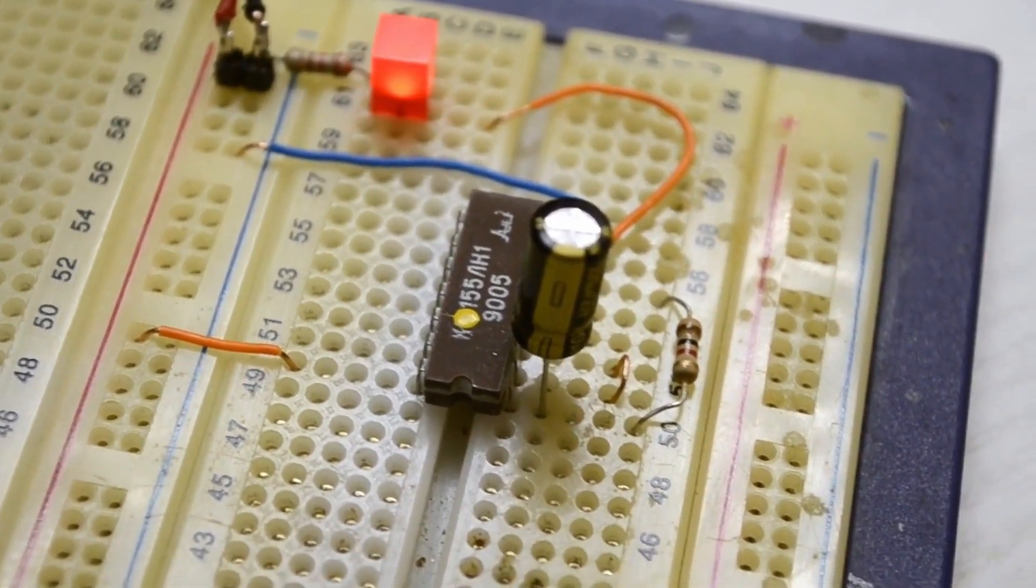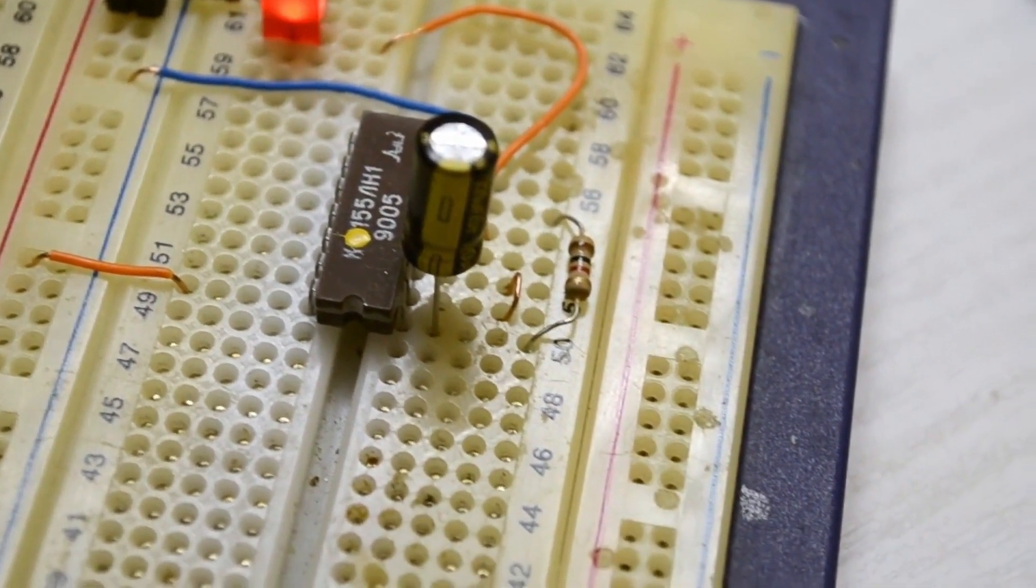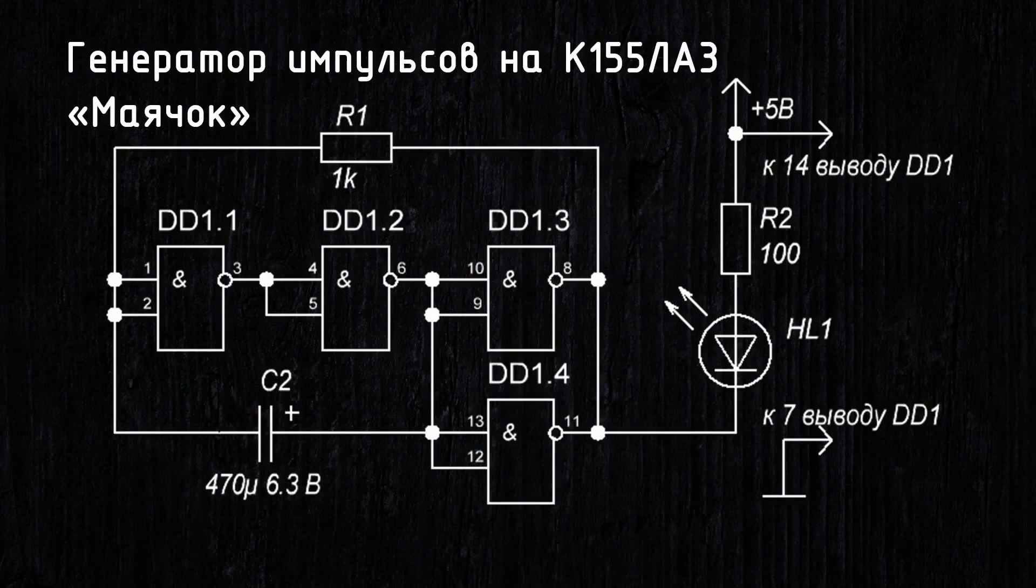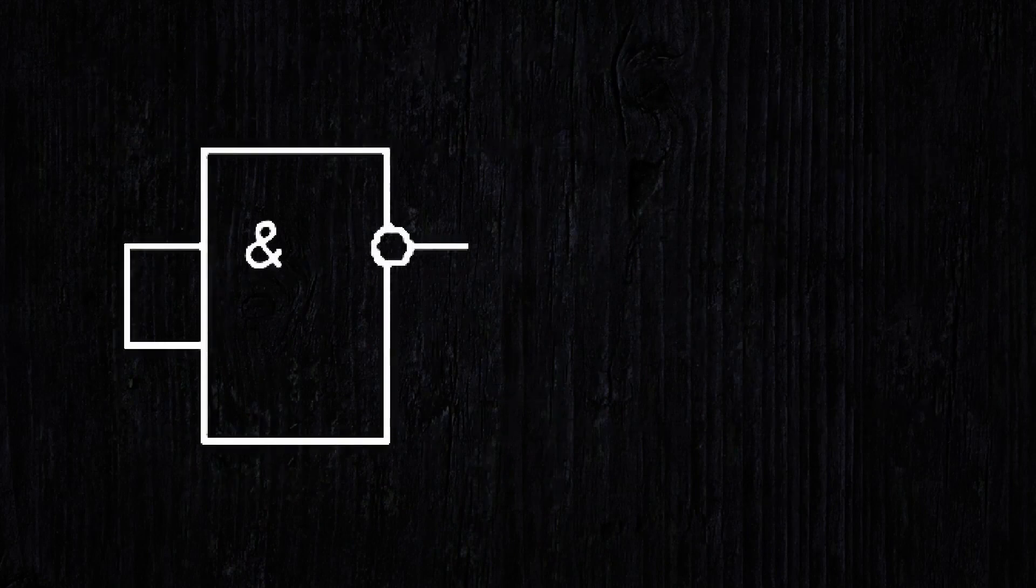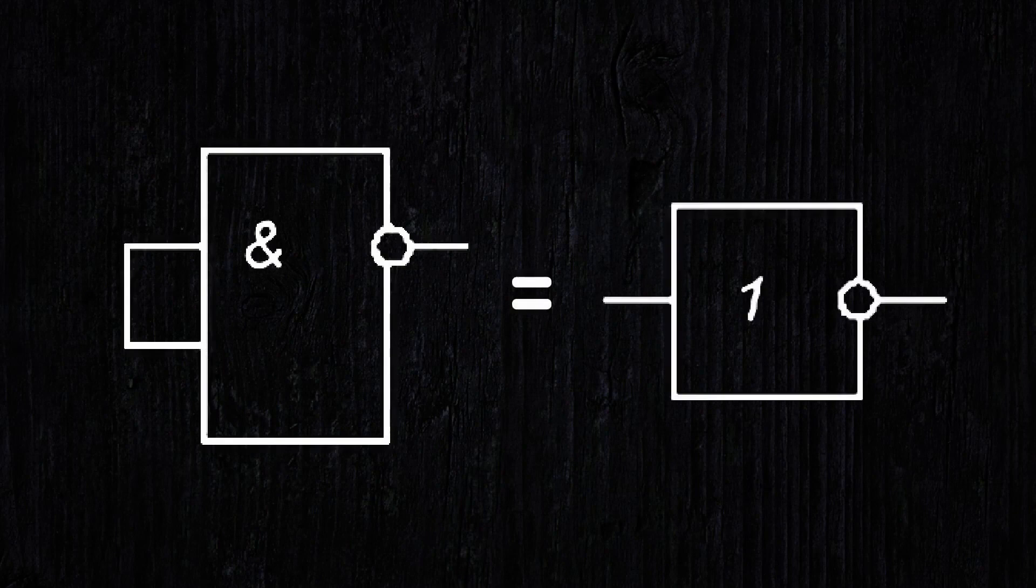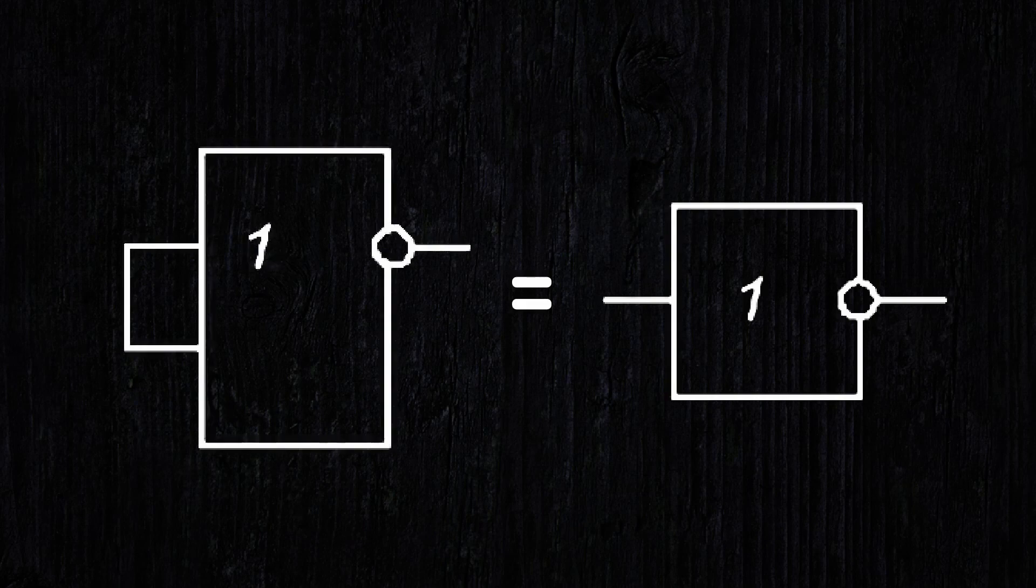In this circuit, three INE elements are connected in series, and their inputs are shorted. It's not hard to guess that shorting the inputs turns the INE microchip into a NOT microchip. Moreover, this trick also works with the ILNE microchips marked with LE, which we will discuss some other time.